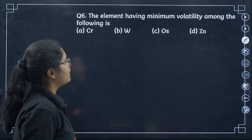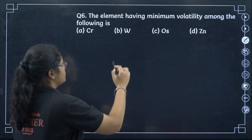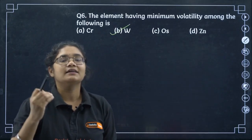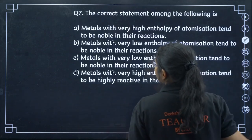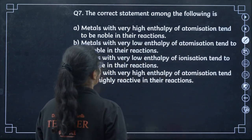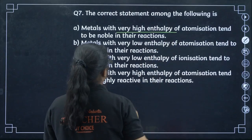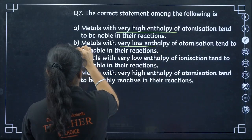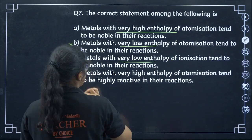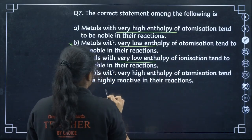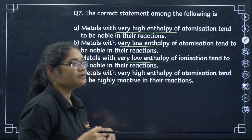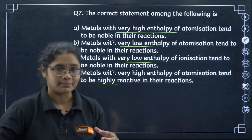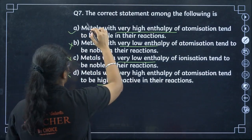The element having minimum volatility among the following is tungsten, because it has a very high melting point and very strong metallic bonding, making it less volatile. Next, the correct statement is that transition metals have very high enthalpy of atomization and tend to be noble in their reactions — when enthalpy of atomization is very high, it becomes very difficult for reactions to happen, so they are inert. That is option number A.